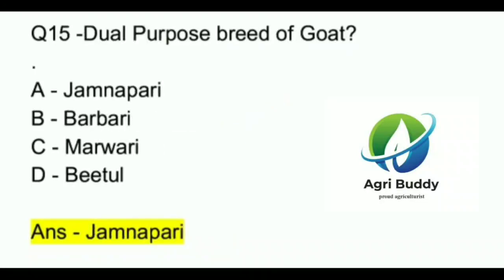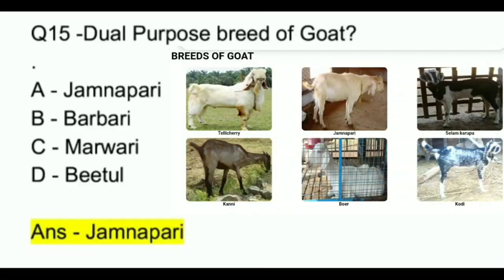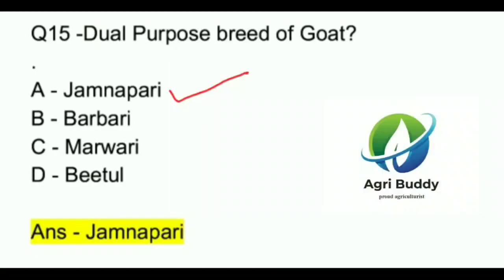Question 15. Dual purpose breed of goat is? A. Jamnapari. B. Barbari. C. Marwari. D. Beetal. And the answer is Jamnapari.